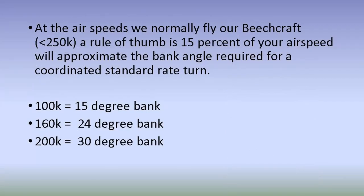For airspeeds below 250 knots, the rule of thumb for the angle of bank required for a standard rate turn is 15% of the airspeed. At 100 knots: drop the zero, get 10, take half — that's 5, so 15 degrees. At 160 knots: 16 plus 8 equals 24 degrees. At 200 knots: 20 plus 10 equals 30 degrees. That's a generally close estimate.